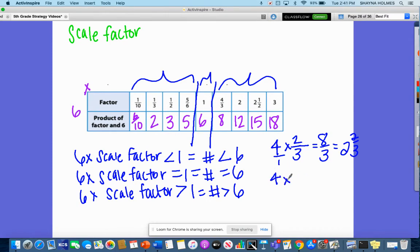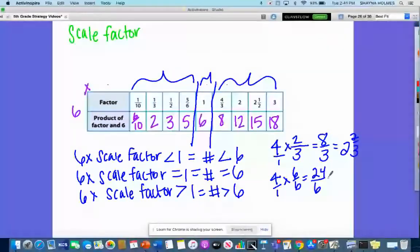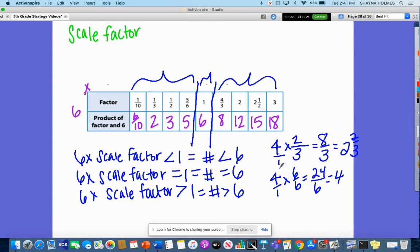Let's look at four times six over six. Now this is the one we just did. So that's 24 over six, which is four. I get the same number. So four times any number equal to six will get me four.